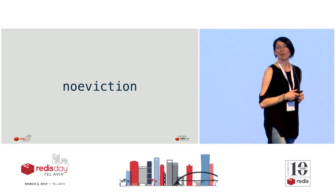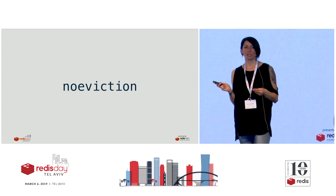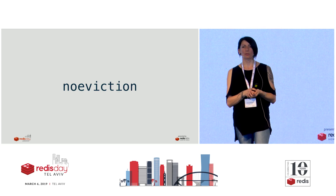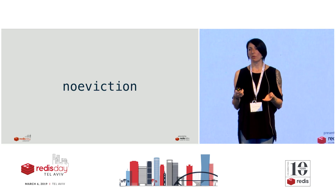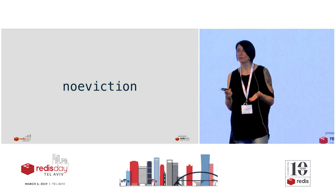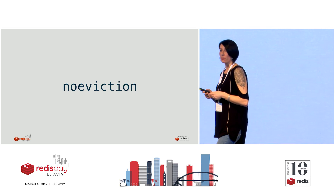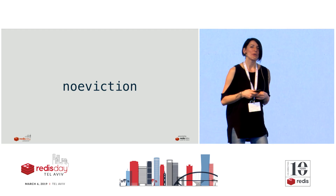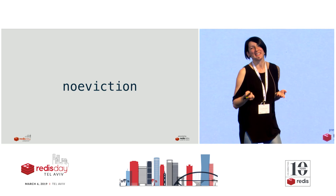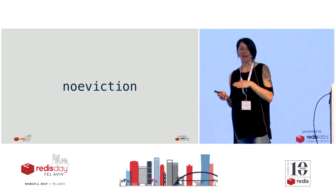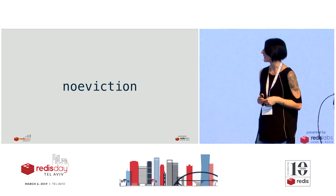About that time, a little bit later, there was one more eviction policy added, which was needed and requested by the developer community: no eviction. In that case, if Redis was not used as a cache - just used as a normal database - people didn't want their keys evicted. So we got the no-eviction policy, where just an error would be returned and no evictions would happen.